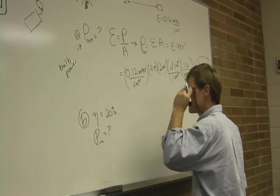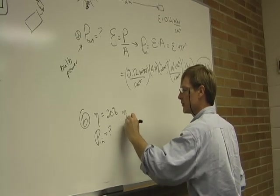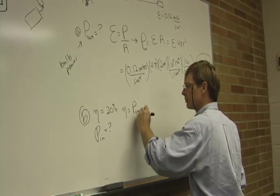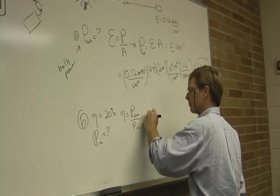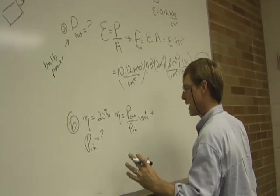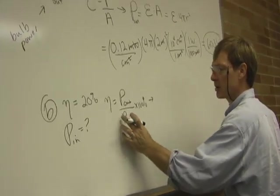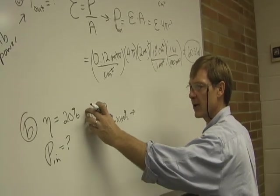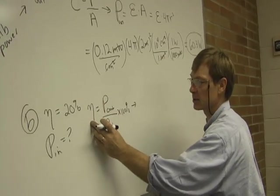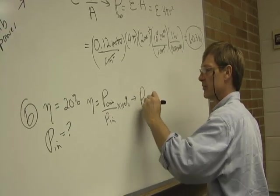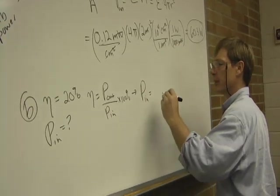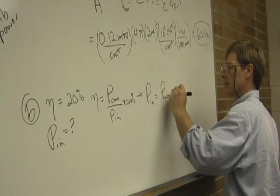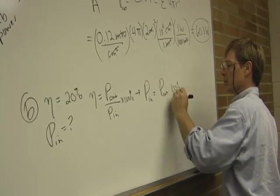Well, let's see. Efficiency is output power over input power times 100%. If I do the algebra and solve for the input power, I need to multiply both sides by the input power to get it on top, and then divide both sides by the efficiency, eta, to get the input power all by itself. And I'll have this. Input power is output power times 100% over the efficiency.